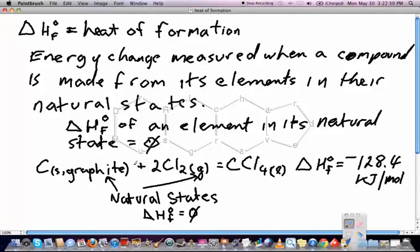So an example of that would be, let's say we were making carbon tetrachloride, CCl4. That would be made from carbon, which is solid graphite. That's considered to be the natural form. And Cl2 gas is considered to be a natural form for chlorine.